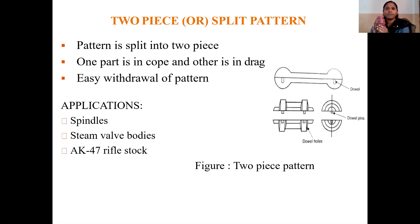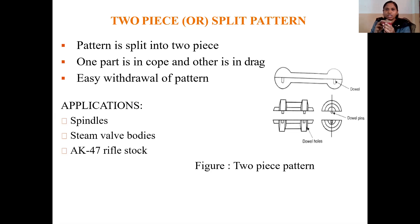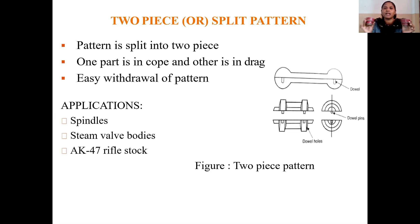One pattern is placed in the cope and another pattern is placed in the drag box. You will mold the process separately. The complete top section of the pattern is kept in the cope and the bottom section is kept in the drag box. So the molding process is performed separately. After the molding process is completed, you take out the mold boxes.